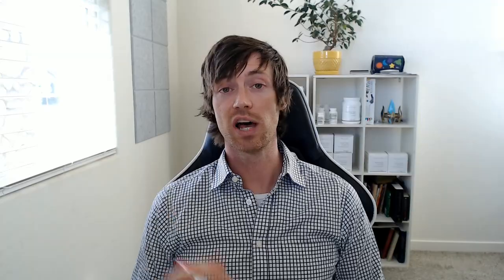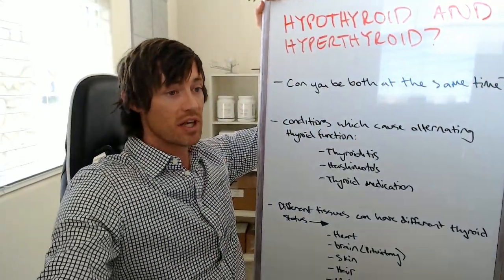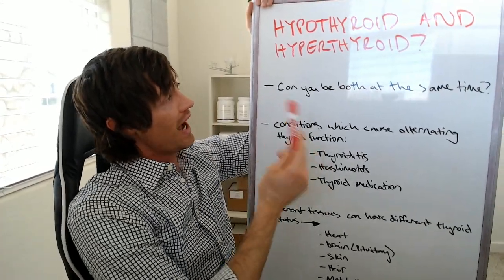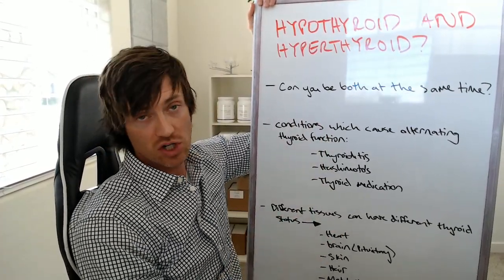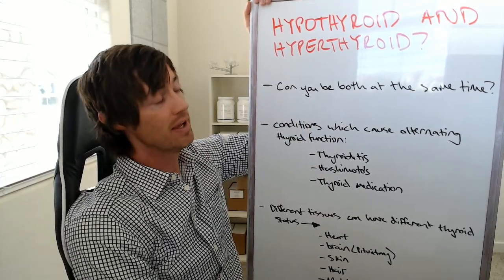I'm going to explain to you though a lot of the tricky scenarios that can occur which make this seem really likely. And I'm going to explain to you how different tissues can have different thyroid status. And it'll probably make a lot more sense as we get into it. If you don't know me, I'm Dr. Childs. I'm an internist and I specialize in helping people with thyroid problems, helping people with hormone imbalances, and helping people lose weight. But today we're going to be talking about the difference between hypothyroid and hyperthyroid tissues.